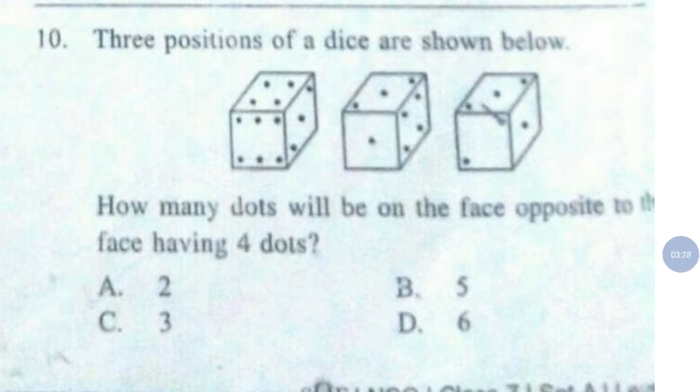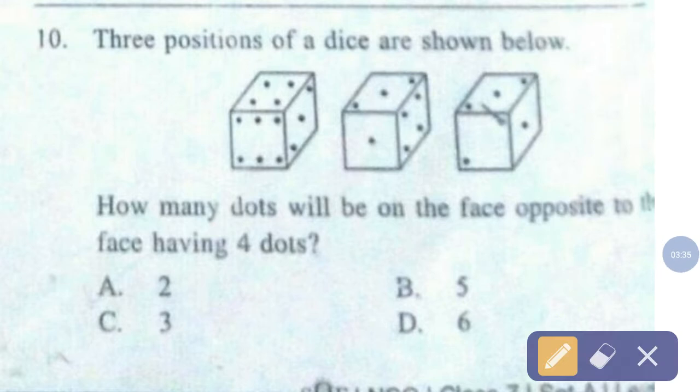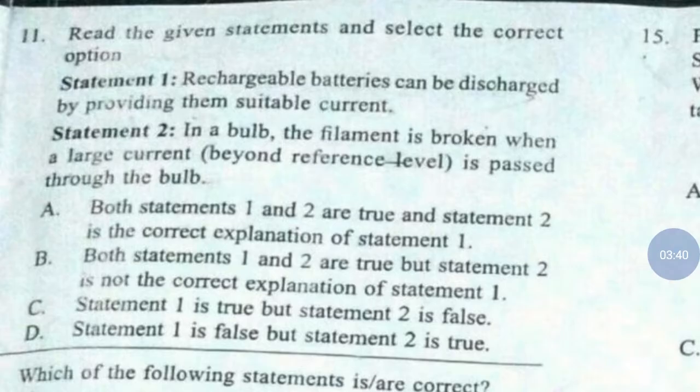Question number 10. Three positions of a dice are shown below. How many dots will be on the face opposite to the face having 4 dots? The correct answer is option number A — two.